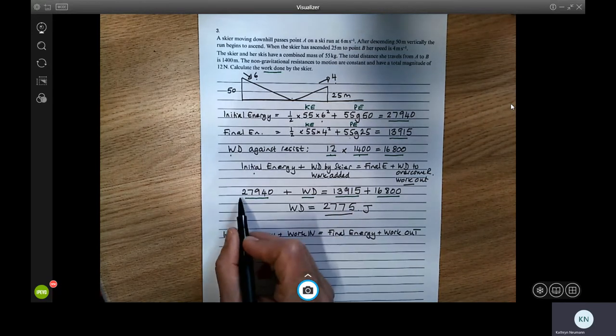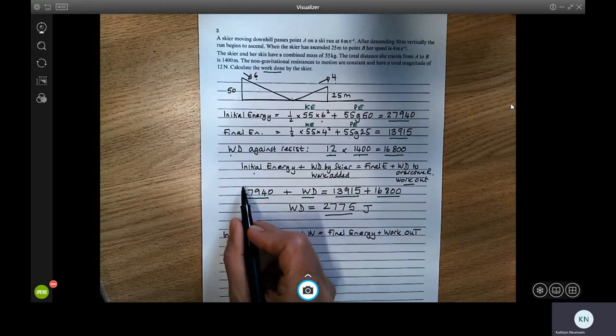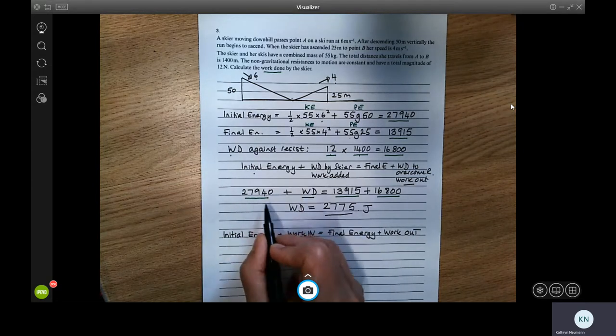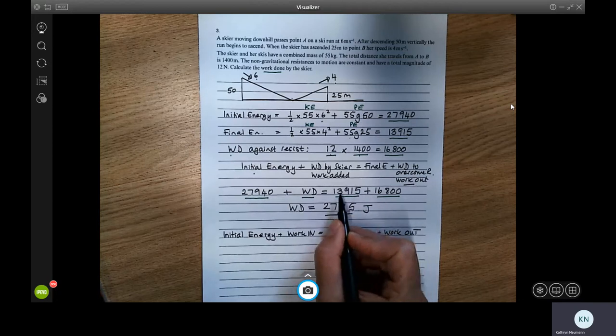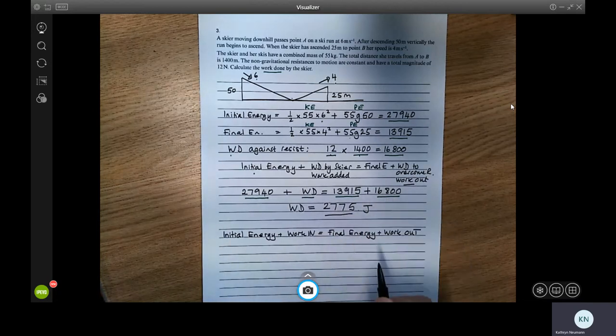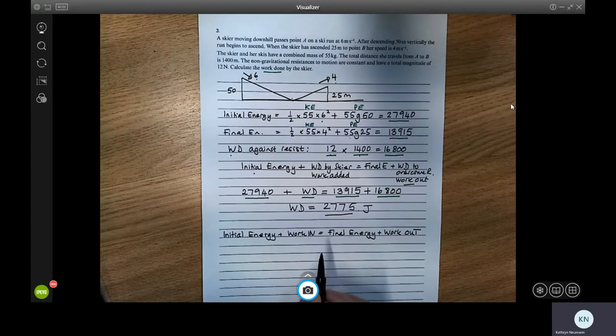So one way of thinking of it is that at the beginning, you've got all this energy and the work you've put in. Where does all that go to? That goes to the energy you have at the end plus any work you had to do or take out of the system. So that's the work energy principle. You need to just think about how many forces are acting on the particle to decide which form of it to use.